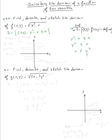We graph x = y², which is a parabola opening to the right. We want x to be less than or equal to y², so we want the region that is on the left of the curve x = y². The domain is the region on the left of the curve x = y².